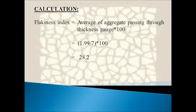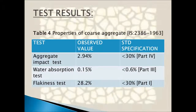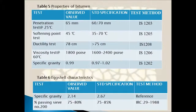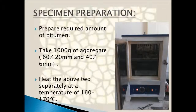The density void analysis is carried out by calculating the unit weight, bulk density, average specific gravity, and maximum specific gravity of the bitumen mix. These formulas give us the presence of air voids, the voids filled with bitumen, and voids filled with mineral aggregate.